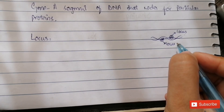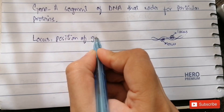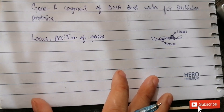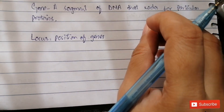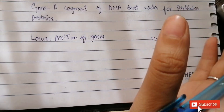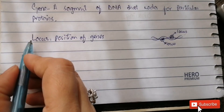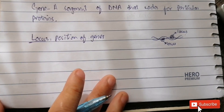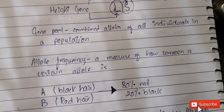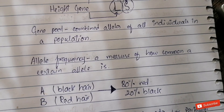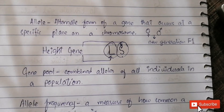So, locus is basically the position of a gene on a chromosome — a very specific location. Every gene has its own particular position on a chromosome, and this position is known as the locus. That's our last definition for today. We have discussed allele, gene pool, allele frequency, gene, and locus. In the next video we will discuss more genetics terms. If you have any questions, please ask in the comment section.